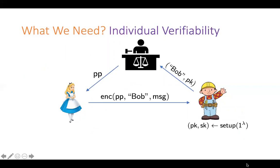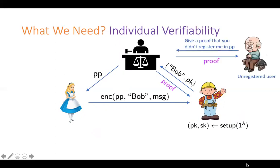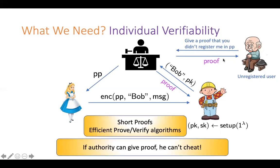Can we make it simpler and more efficient for Bob? For that, we introduce this concept called individual verifiability. At a high level, individual verifiability says that Bob can get a short proof from the authority that Bob is registered honestly. The authority could have cheated when registering other users, but this proof doesn't speak to that — this proof only speaks of Bob. We extend this notion even further. Consider a user who did not register his public key. It's possible that Alice might still be encrypting messages to him using the authority's public parameters. The authority might be corrupt and might have registered this user illegally with some other public key and might be decrypting Alice's ciphertext. This user wants to ensure the authority is not cheating this way. He can obtain a short proof that the authority did not register him. So there are two kinds of users — registered users and unregistered users — and we need proofs for both.